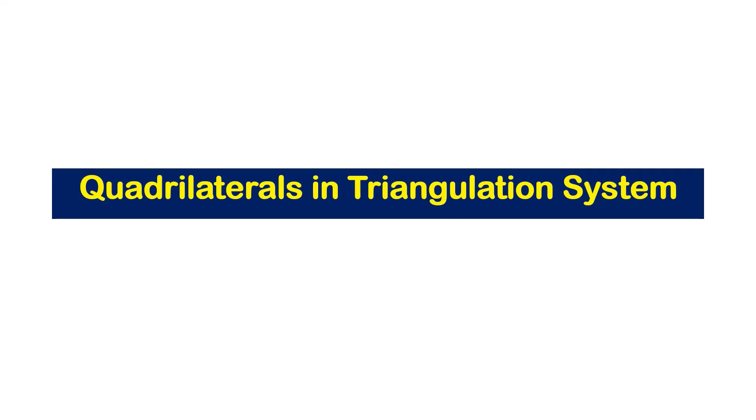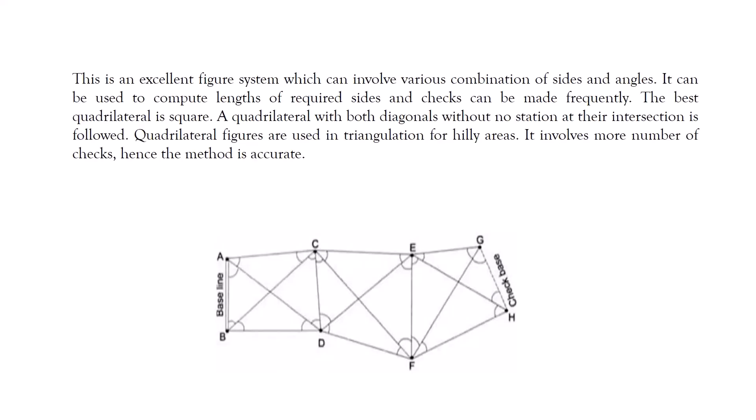Quadrilateral for triangulation in surveying: This is an excellent figure system which can involve various combinations of sides and angles. It can be used to compute length of required sides, and checks can be made frequently. The best quadrilaterals for triangulation are squares. A quadrilateral with both diagonals without a station at their intersection is also followed. Quadrilateral figures are used in triangulation for hilly areas. It involves more number of checks, hence the method is more accurate.